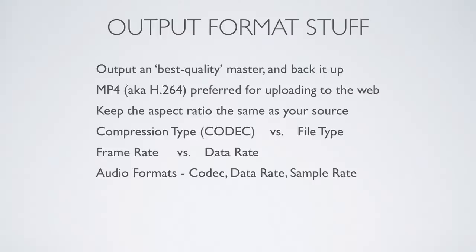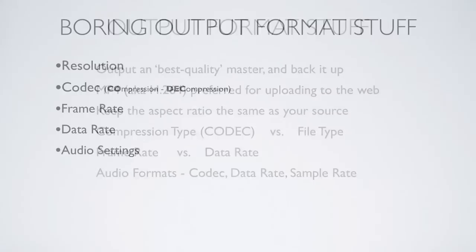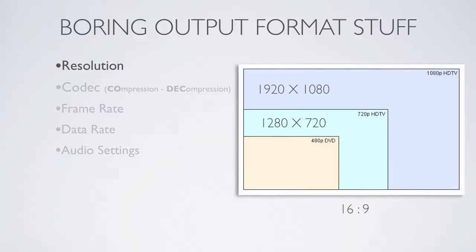We'll talk a little bit about audio codecs, data rates, and sample rates. On resolution: you can see the difference in this chart between 480p standard NTSC resolution up to 1920x1080 HDTV, which most camcorders — including many phone cameras — shoot at. The 1920 is the number of pixels from left to right, and 1080 is the number of lines from top to bottom.